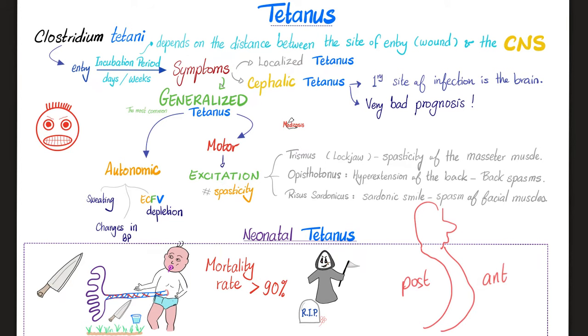Prevention is better than cure. To prevent tetanus: vaccination with three doses of the tetanus toxoid, plus a booster every 10 years.